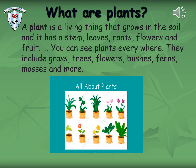What are plants, children? Let me explain. A plant is a living thing that grows in the soil. It has a stem, some leaves, roots, and beautiful flowers as well as fruits. You can see plants everywhere. They can be like grass, a tree, a flower plant, bushes, ferns, mosses, or many more. Plants can be found everywhere.